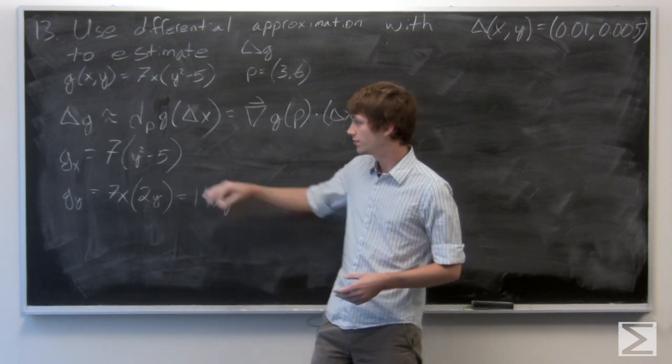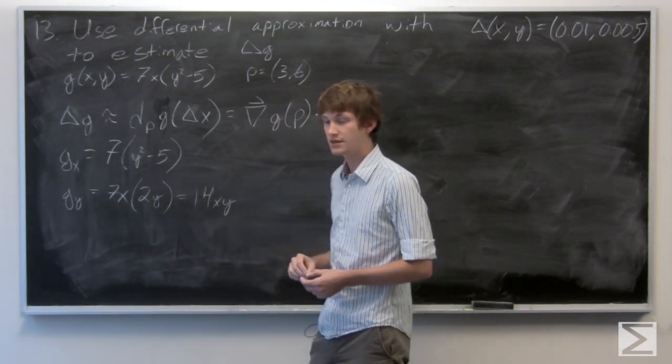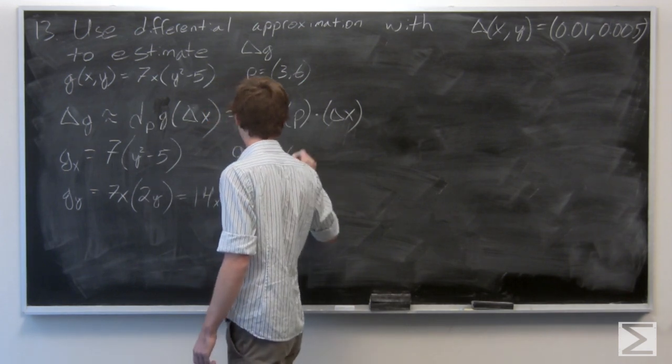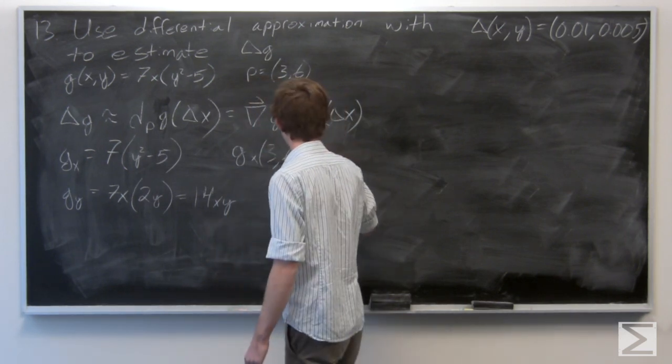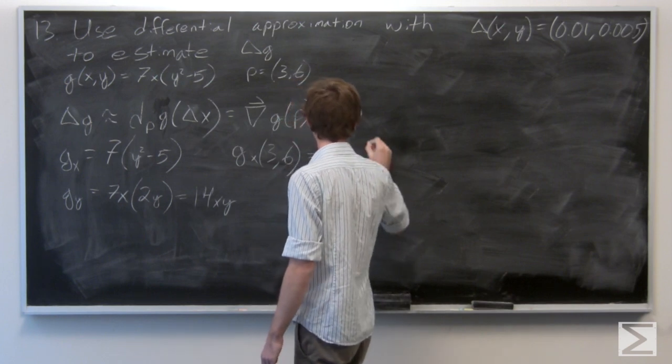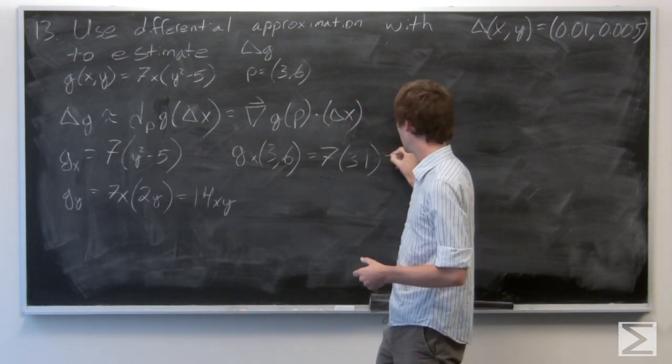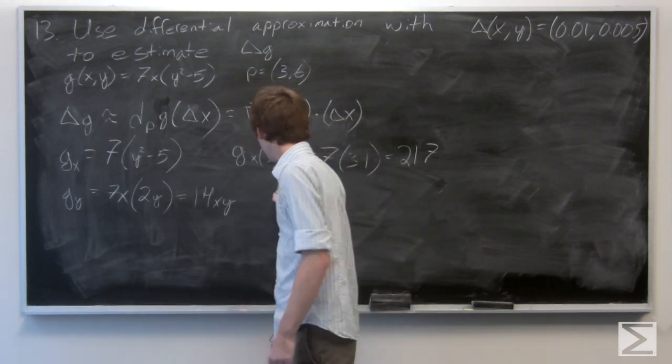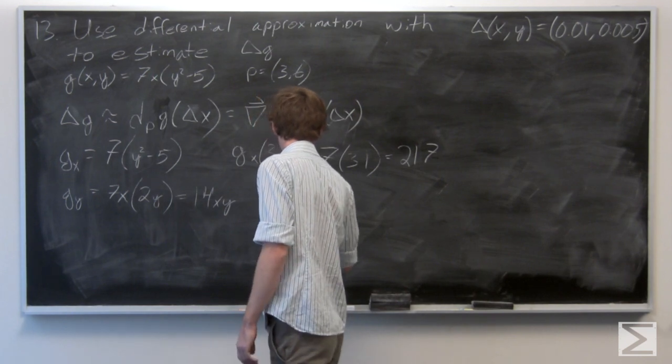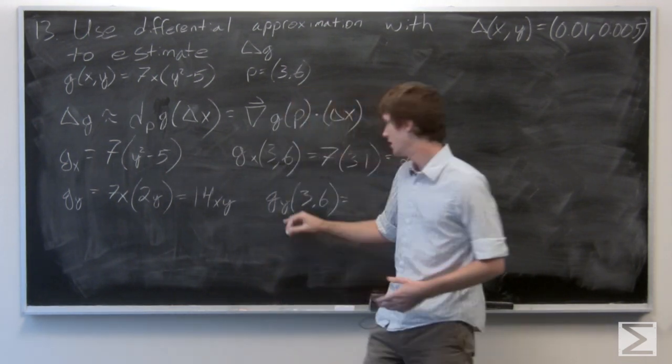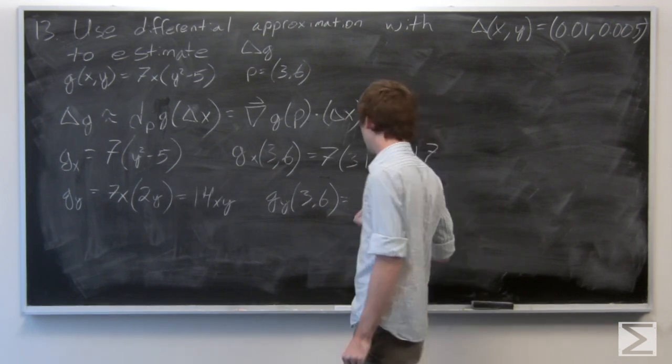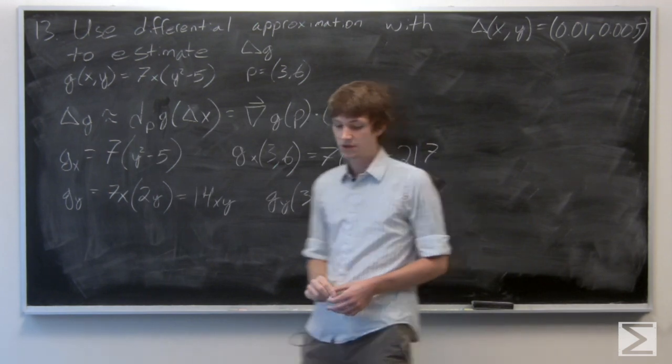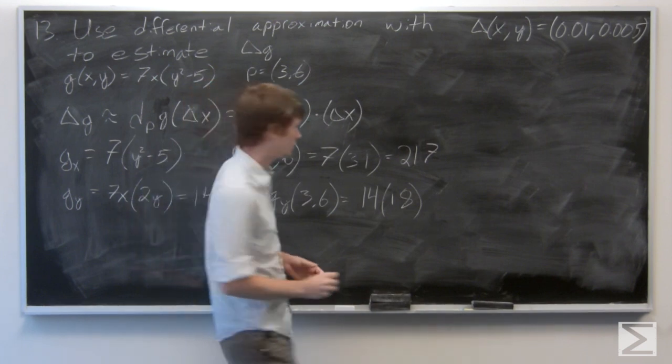So now we're going to calculate the partial derivative of g with respect to x at the point p equals 3, 6, which is equal to 7 times 31, which is 217, and the partial derivative of g with respect to y at 3, 6, which is equal to 14 times 18, which is 252.